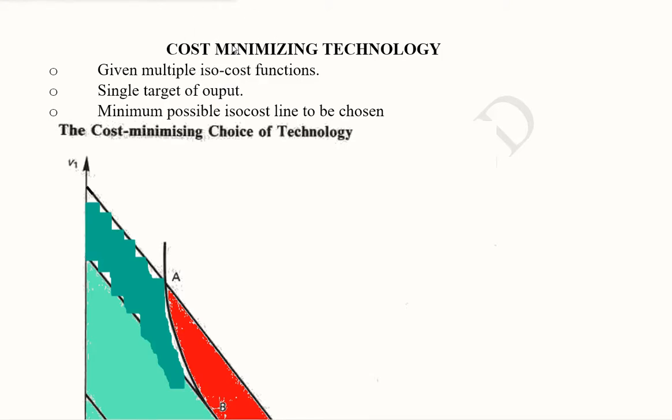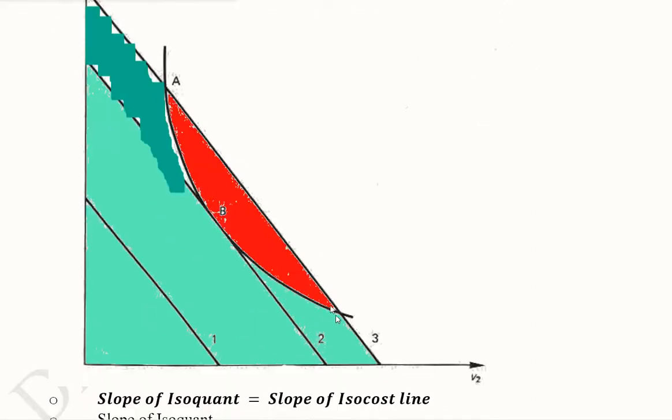The purpose is to minimize the cost and to find that technology. By technology we mean those combinations of labor and capital that we can use. We have a number of isocost functions plotted here, out of which three are visible.